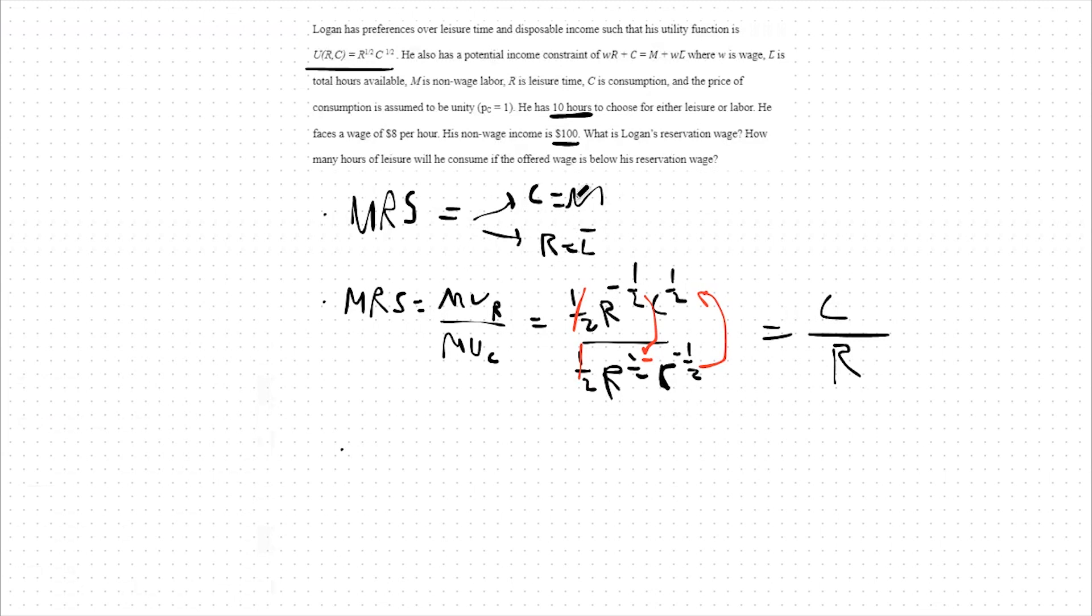Again, at our reservation wage, C is equal to M and R is equal to L bar, so we should plug in those variables. This means our reservation wage is M over L bar in this case.